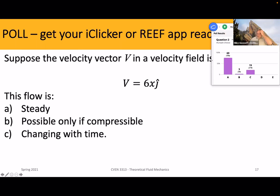69 of you chose A — the correct answer. We're not given any information about T; our velocity is not a function of time at all. If it was a function of time, we could say it's accelerating or decelerating. But with 6X j-hat, 6X is all the information we're given. As we change in the X direction, we increase or decrease the velocity amount, but that has nothing to do with time. There's no function of time, so the flow is steady. And there's no information indicating anything about change in density or mass for option B.